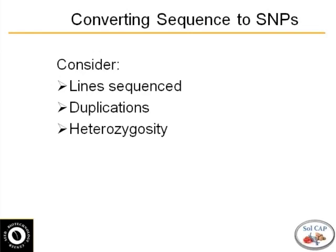One of the things we didn't talk about when it comes to assembling is duplications of genes. Every plant genome has large duplications — a large portion of the genome being duplicated. Even Arabidopsis, supposedly the simplest genome, has about 25% to 30% of duplicated genes in it.